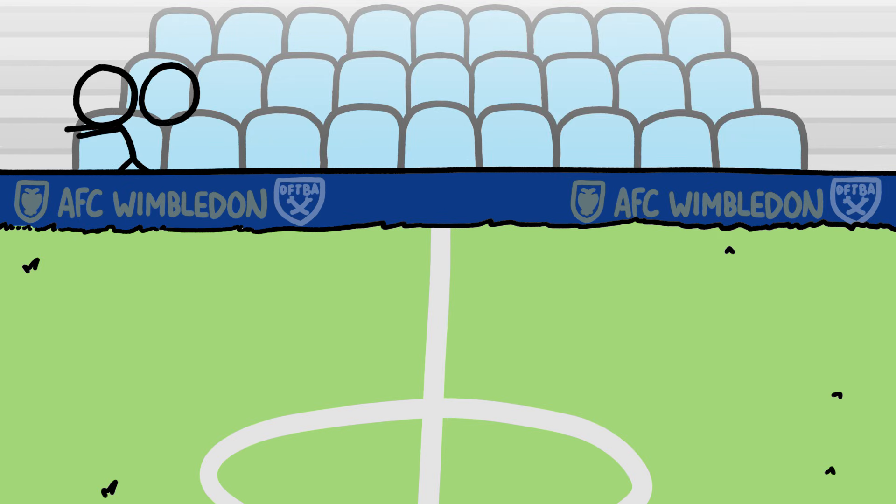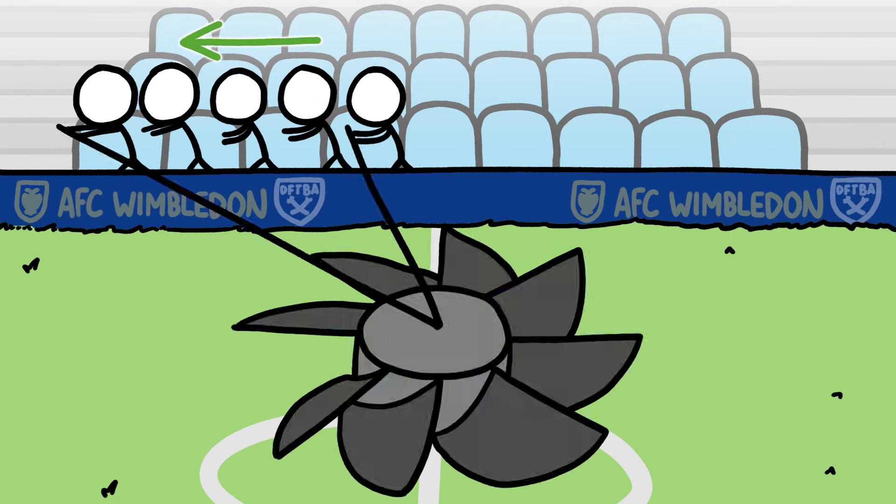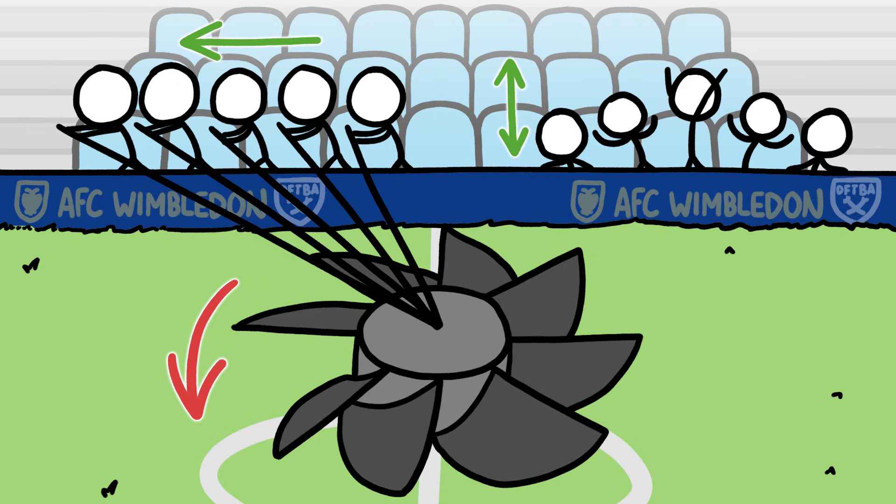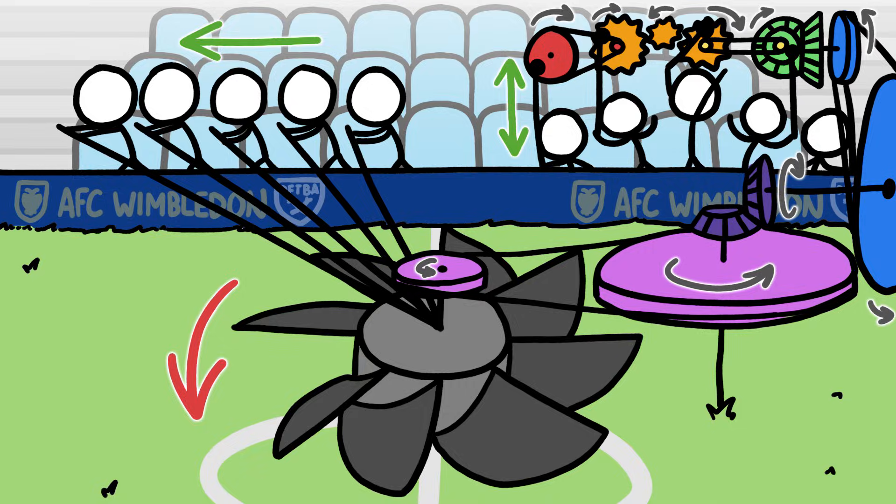If the entire crowd was, say, walking around the stadium, you could imagine everyone helping twist a single big turbine on the field. But if people were just standing up and sitting down, you'd need a more complicated system to move the turbine.